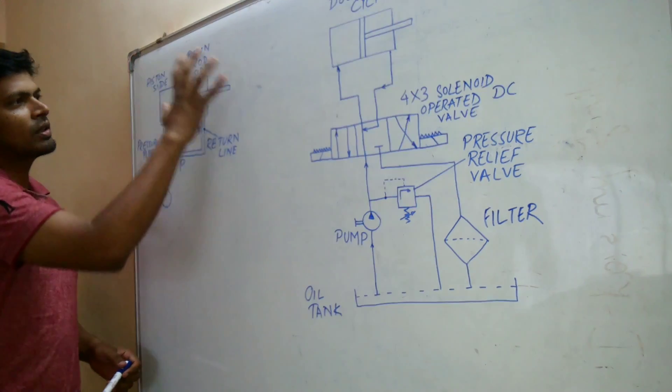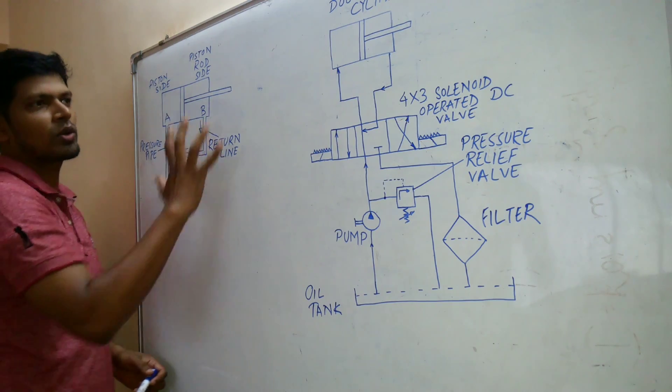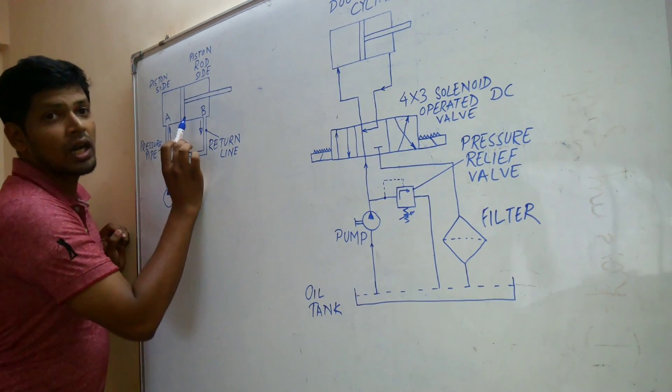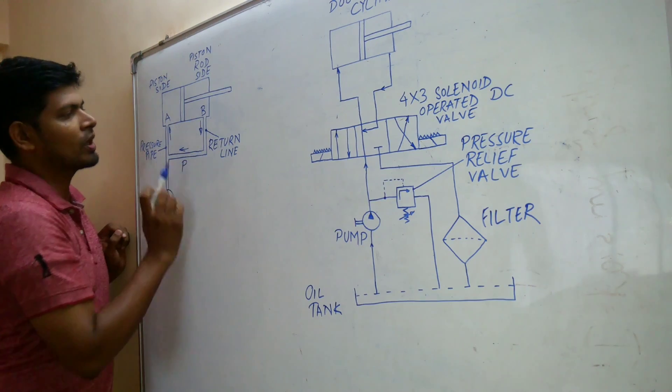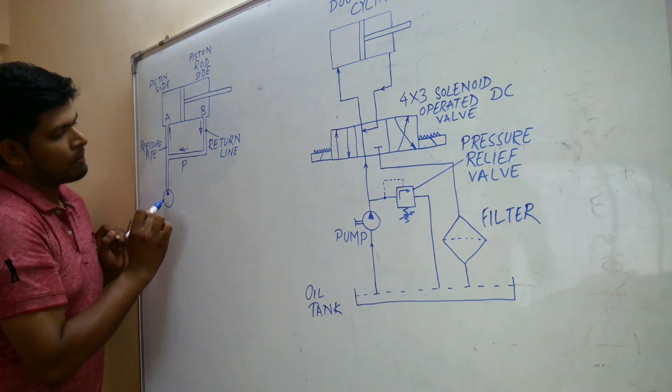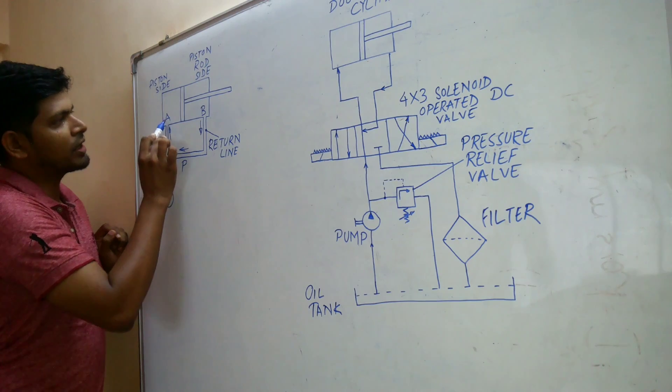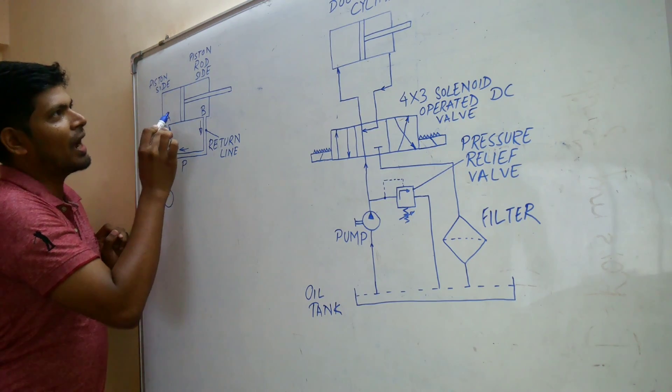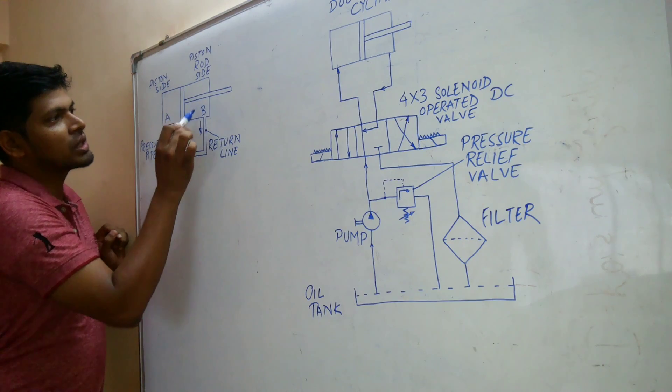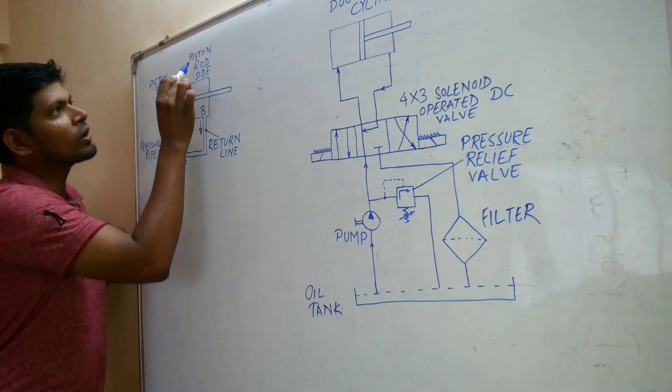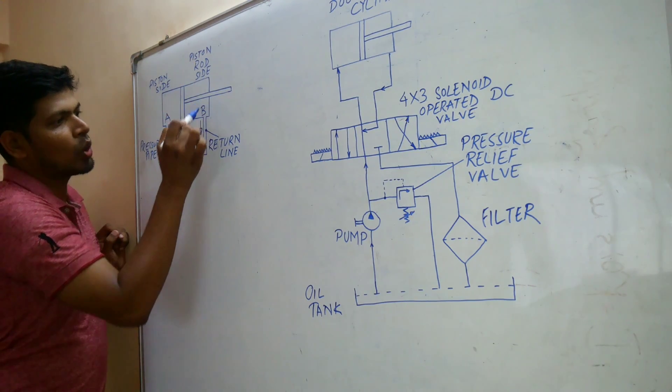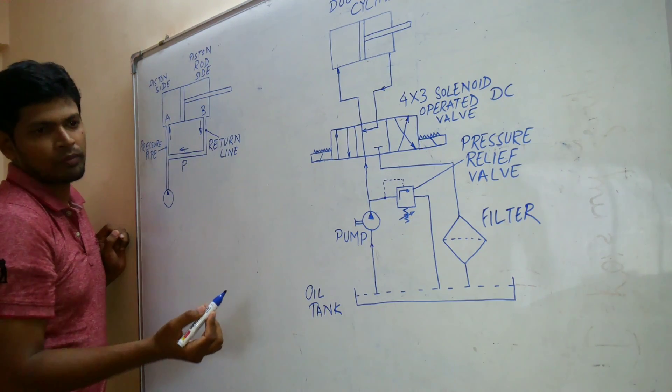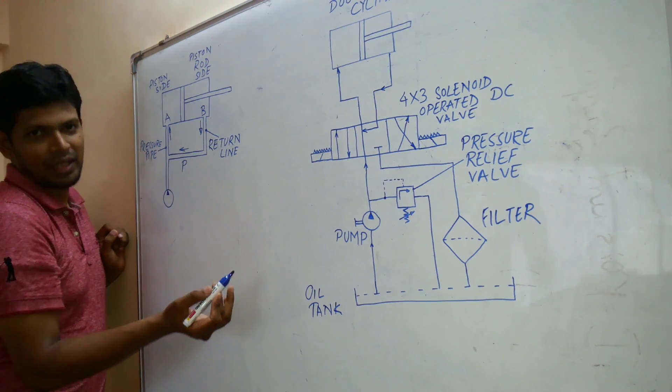Let us understand the setup here. Then we can go to the circuit diagram. Here you can see a double acting cylinder. The pump is pumping the fluid and it is going to port A which is the piston side. And the fluid which is here on the piston rod side goes to the return line. Normally through the return line it goes to the tank.